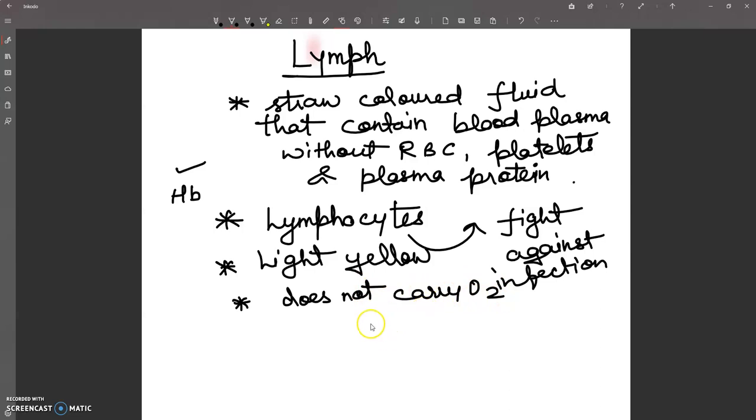Blood is part of a closed circulatory system, whereas lymph is part of an open circulatory system.